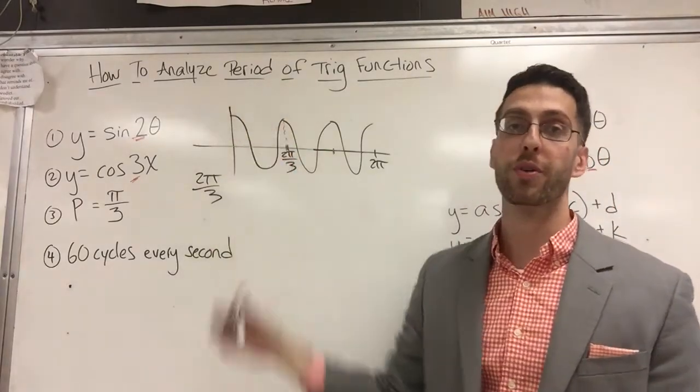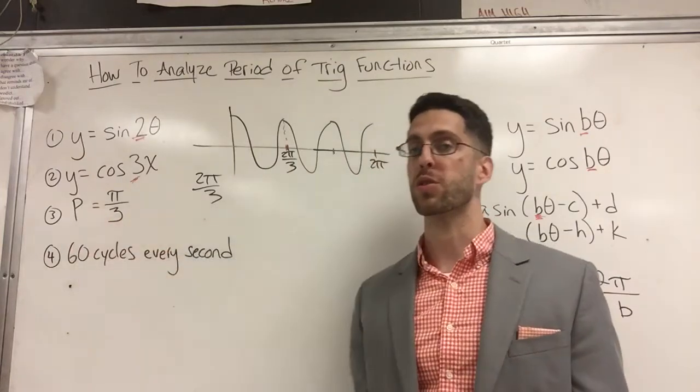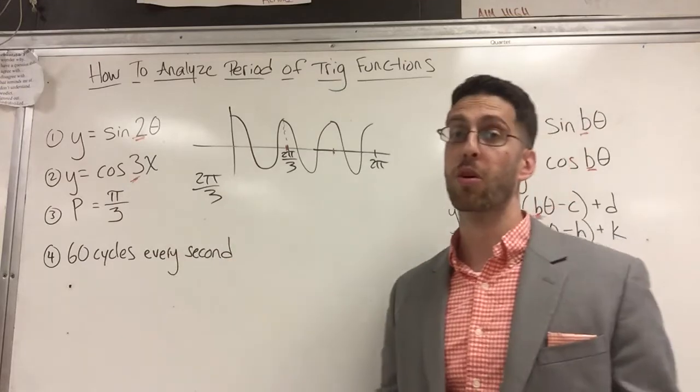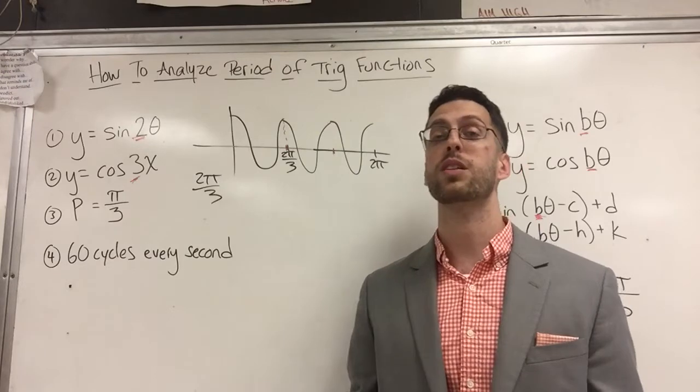What if they give you the period? Can you determine the frequency? Maybe that will help us write the equation. So the period is pi over three - that means there's a graph whose full cycle ends at pi over three.